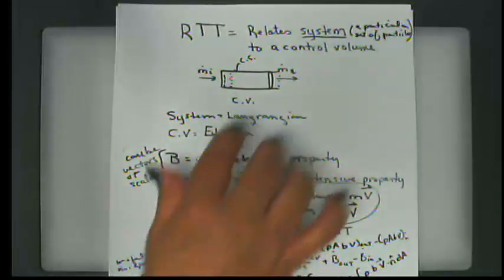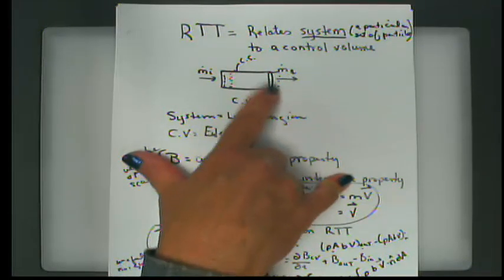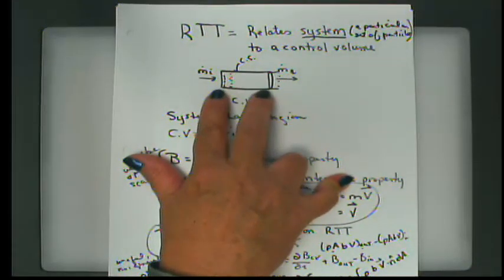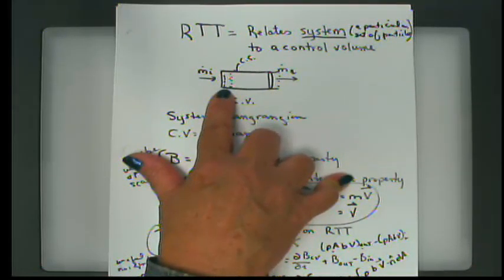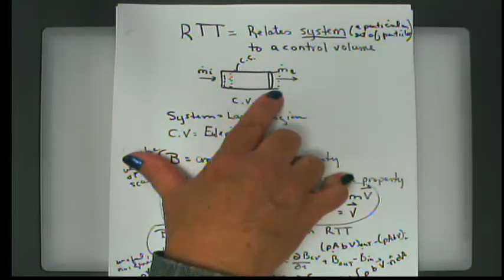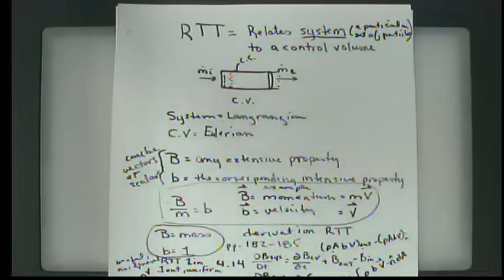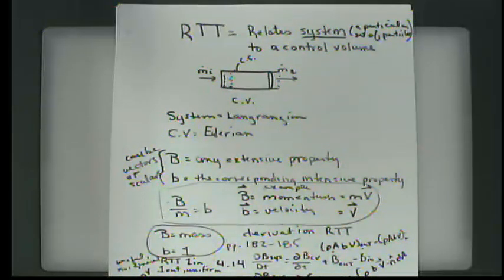At time t equals zero, the mass — this particular slug of mass, or the particular set of particles — is exactly contained within the control volume. But as time passes and the fluid moves, some mass enters the control volume that is not part of the system, and some part of the system leaves the control volume, having passed through the control surface. So the system is that Lagrangian approach, and the control volume is an Eulerian method of analysis.